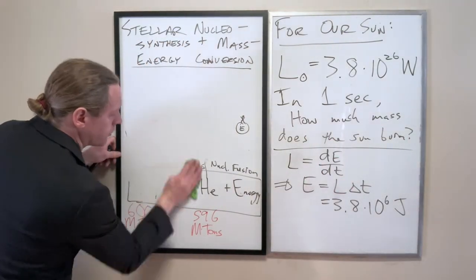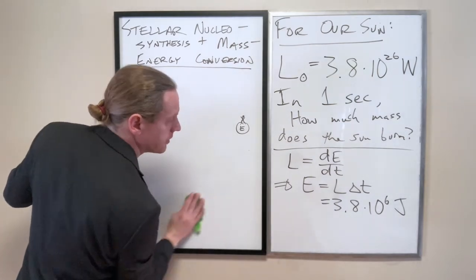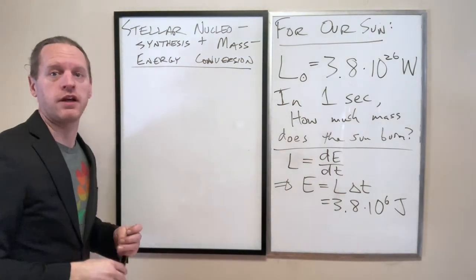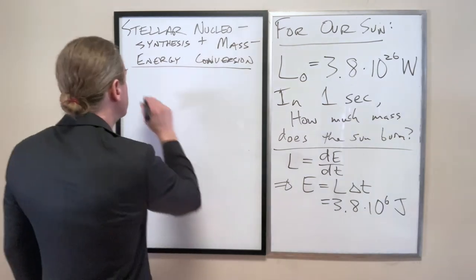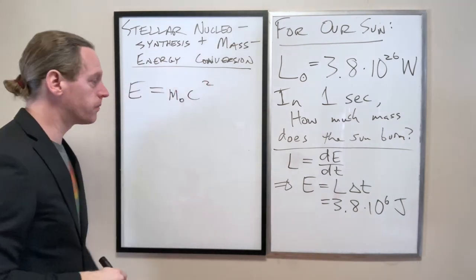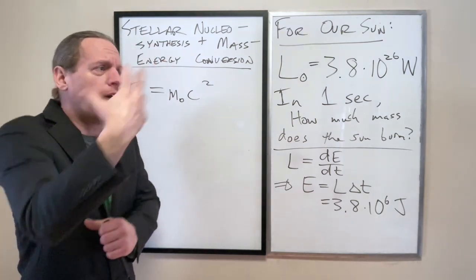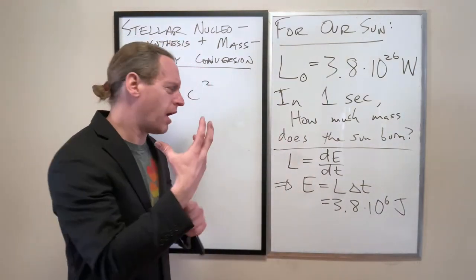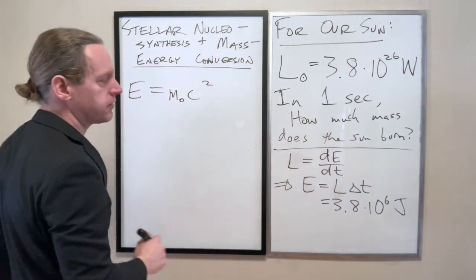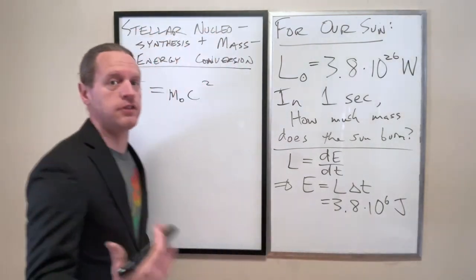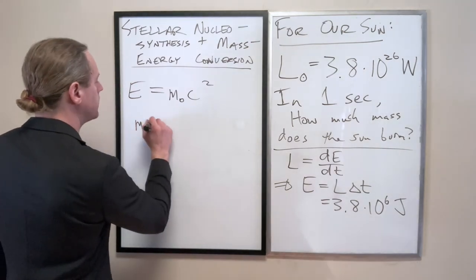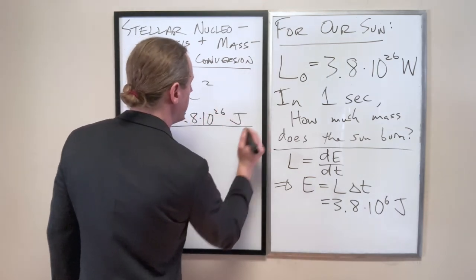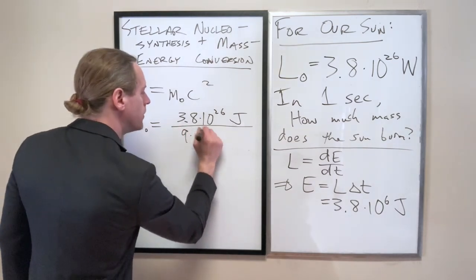All right, so then let's now use Einstein's equation to figure out what the rest mass of that, or the amount of mass we would destroy to produce that energy. So we have E equals M naught C squared. Now, by the way, everything inside the sun, because it's literally tens of millions of degrees, is moving at very high speeds. So there is absolutely kinetic energy involved here, too. But we have E equals M naught C squared. Literally just divide that energy by C squared. So you take M naught equals whatever that energy is, divided by C squared, 3.8 times 10 to the 26 joules, divided by 9 times 10 to the 16.